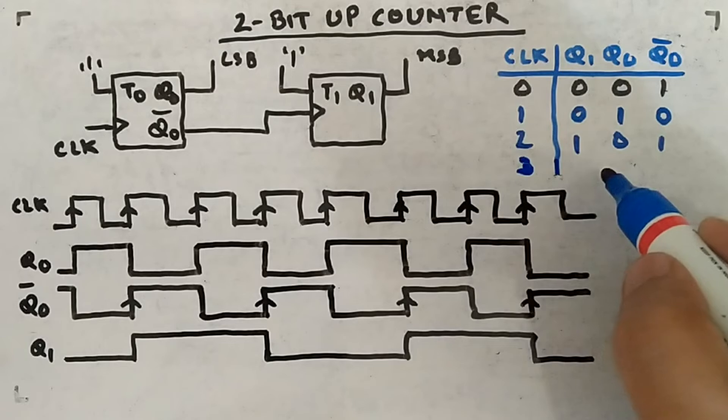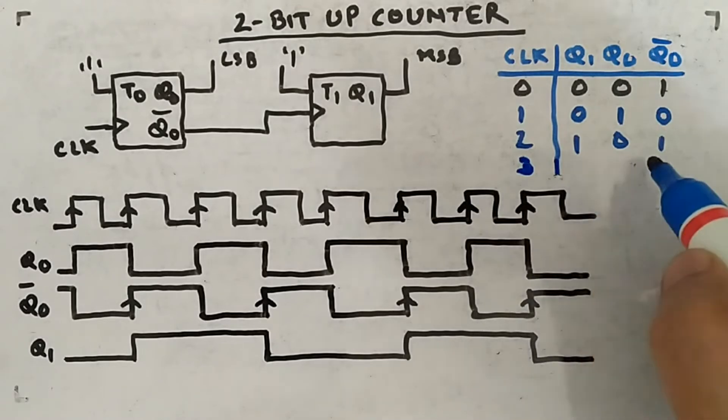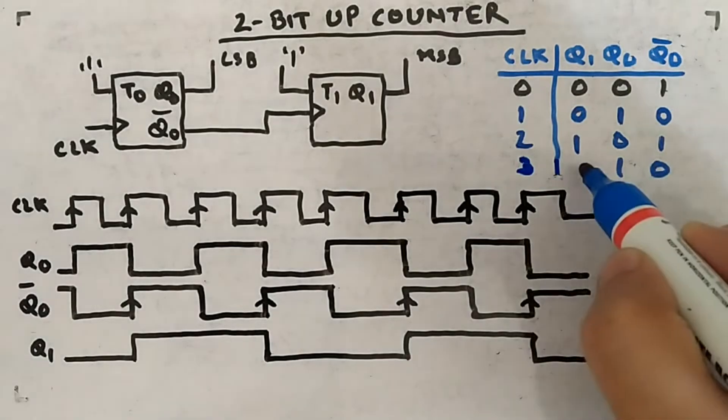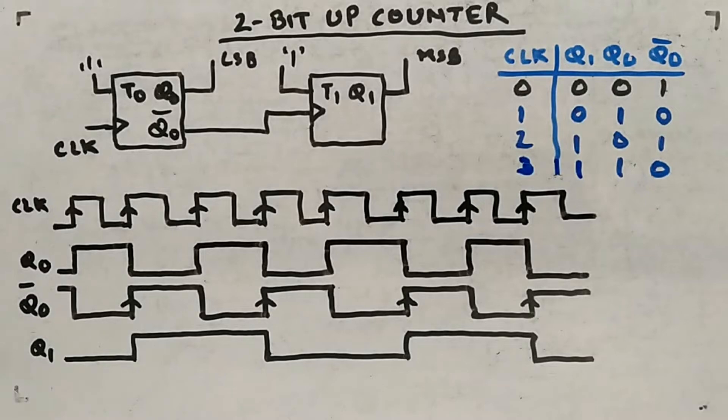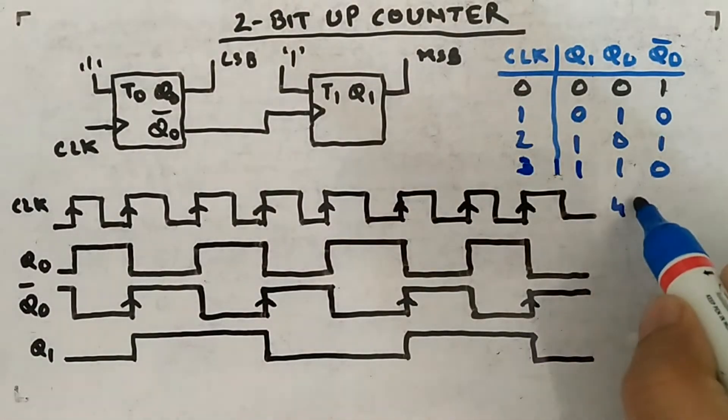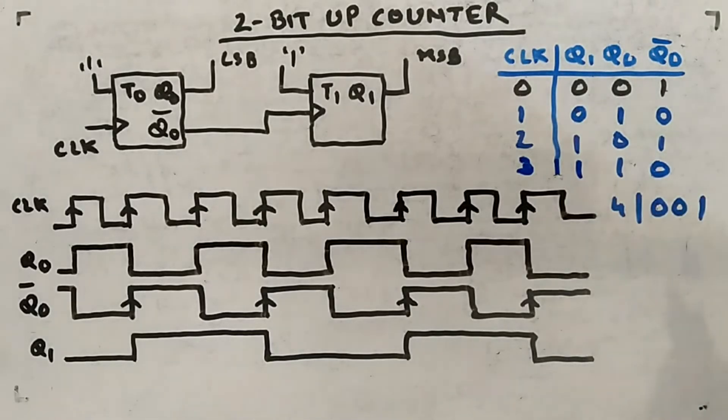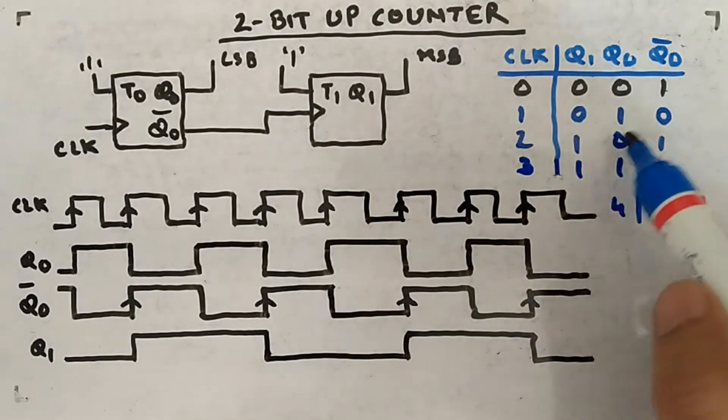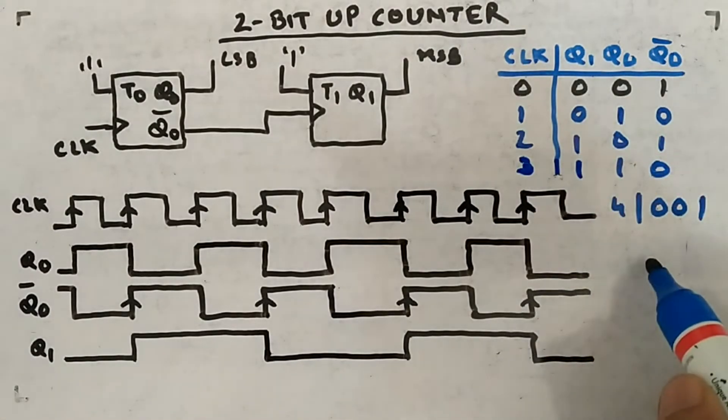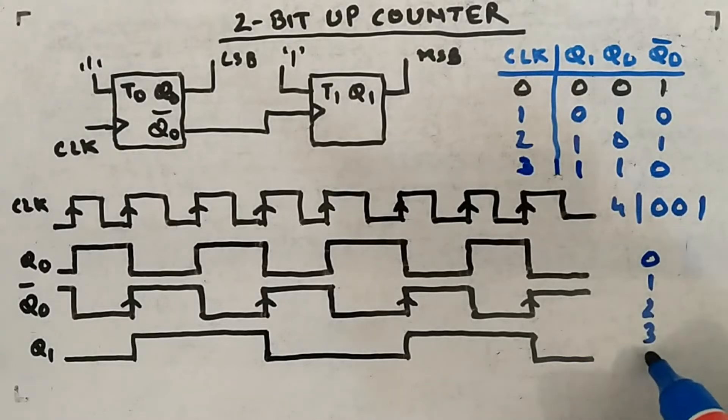Second clock pulse will come. This guy will change to 0. This is toggling every clock cycle. Since this is 0, Q0 bar will become 1. Now you can see it's a change from 0 to 1. Positive edge came, so this guy will also change its state and it will toggle. Then third clock cycle, this guy will change. Since this is 1, this will become 0. There is a negative edge, so this will be as it is.